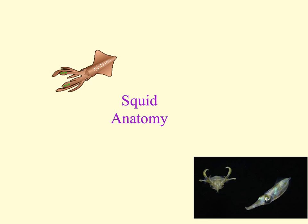Molluscs will also have a structure called a protostome, meaning that during embryonic development the blastopore will form the mouth. They will possess a coelom, which is a hollow space in the body cavity. Molluscs also have organ system level of development, with organs suspended in the body cavity by mesentery. Molluscs all have bilateral symmetry, where you can divide the body into two identical sections.